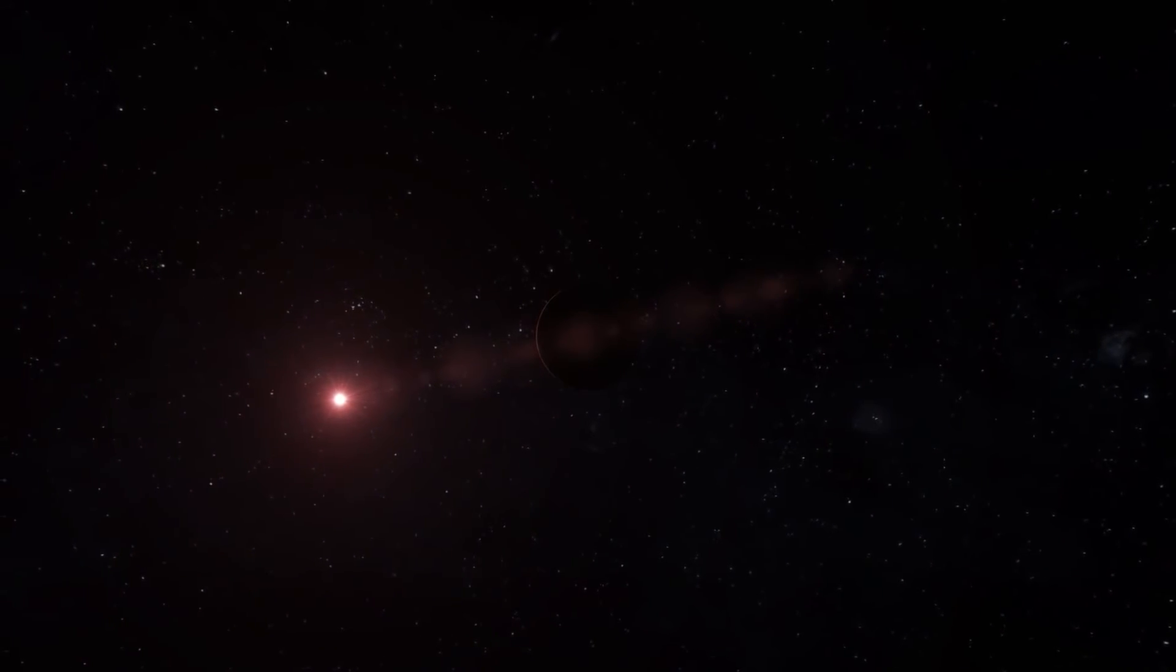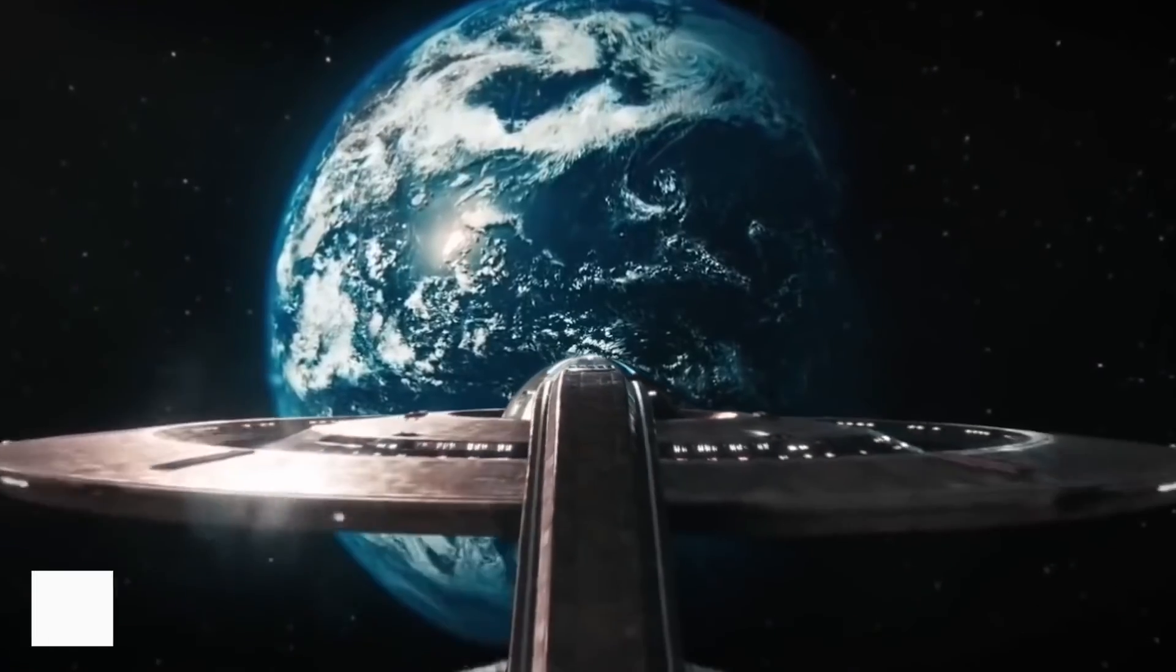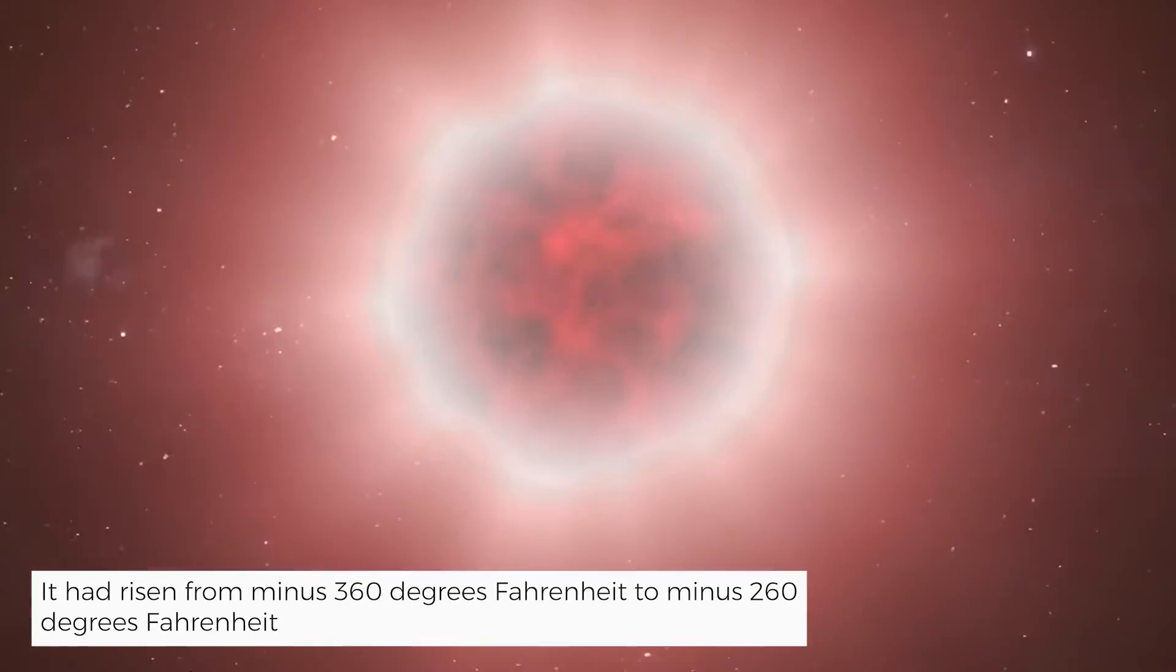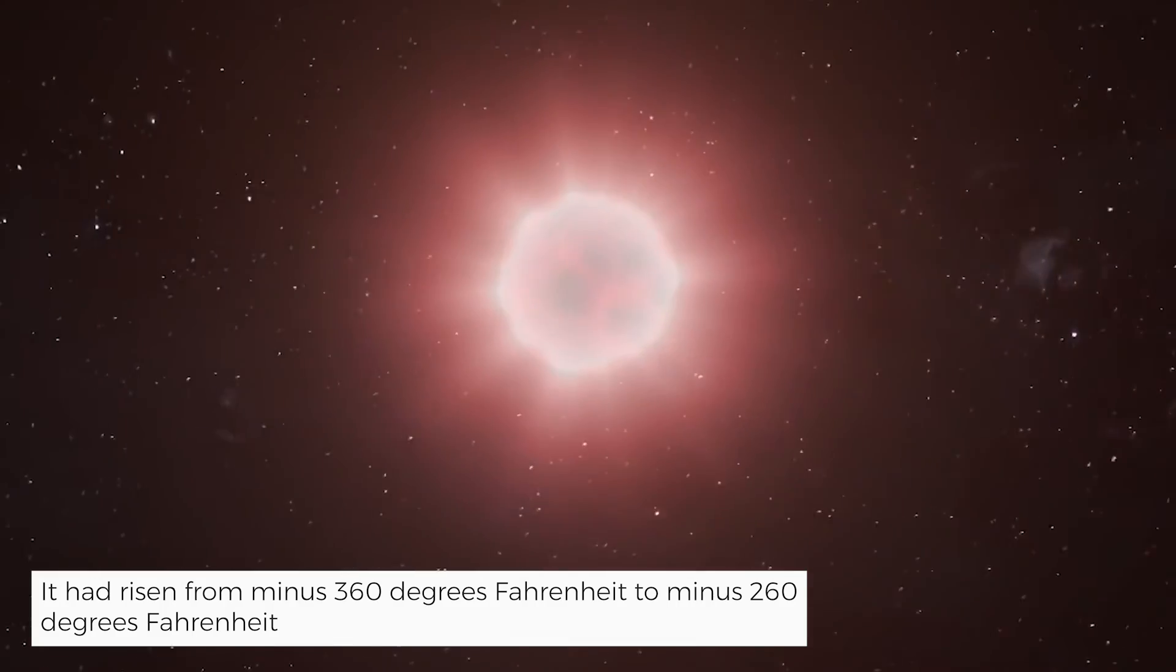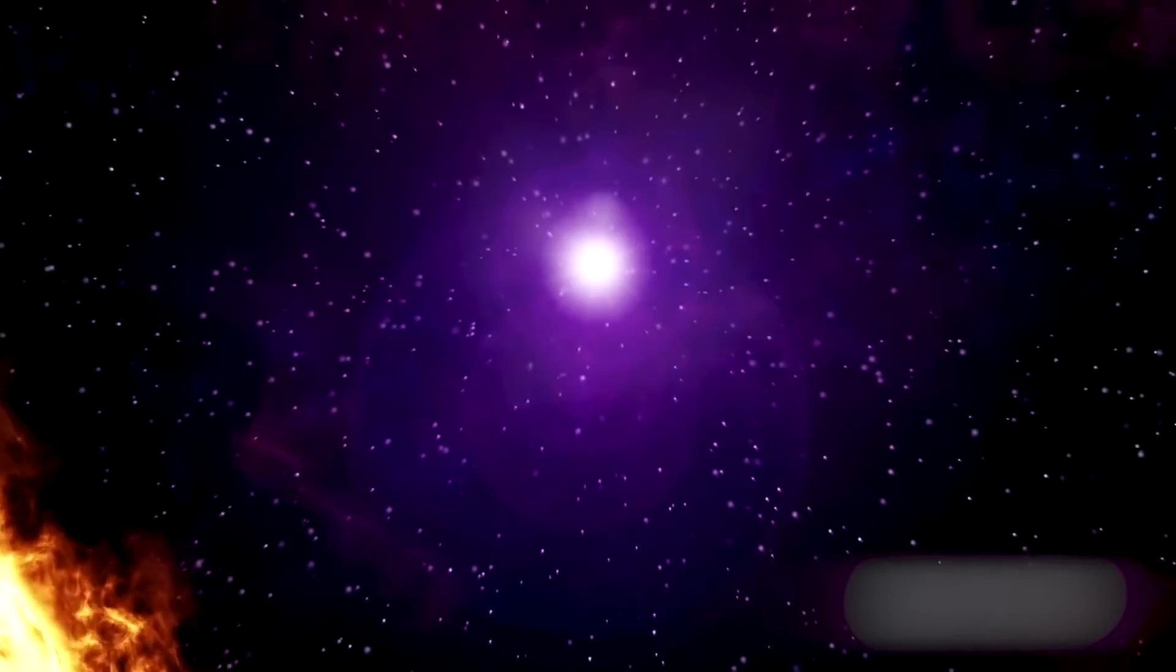Another fact that has made scientists go crazy is the fact that temperature variation has been huge over the years. It has risen from minus 360 degrees Fahrenheit to minus 260 degrees Fahrenheit. Well, what do you think? What might be the reason? Did we heat it? We still don't know. The object goes by the name Kawa.